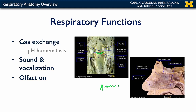A third function of the respiratory system is to connect with the nervous system for olfaction. As air is brought in through the nose and enters the nasal cavity, it's provided with some turbulence. That turbulence brings odorants within the air into contact with the olfactory nerves — cranial nerve 1. These come down through the ethmoid bone, through the olfactory foramina, and this is the basis of smell or olfaction.